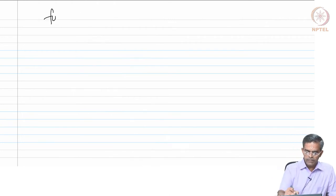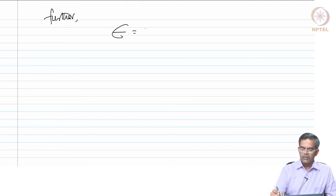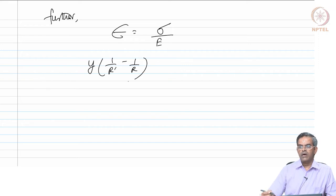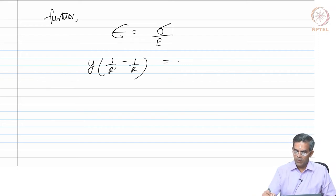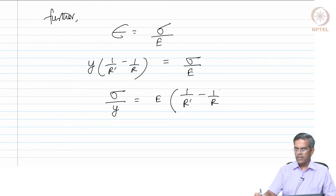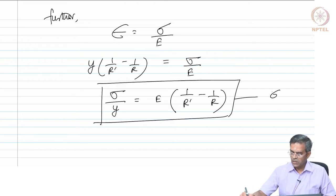Since epsilon is also the ratio of stress to E, we get y·(1/R-prime − 1/R) = stress/E. Therefore, stress/y = E·(1/R-prime − 1/R). We call this equation number 6.